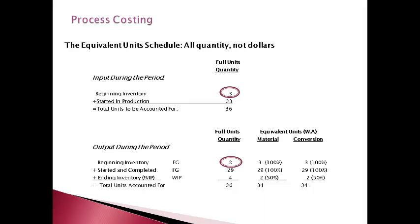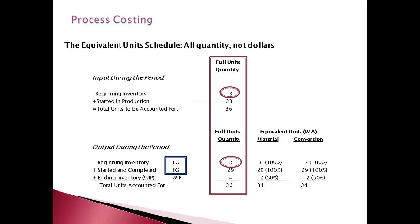Beginning inventory is finished first before other units are started. The 33 units started during the period were either started and finished this period or are not yet finished and still on the production line at the end of the period. The beginning inventory that is finished first and started and completed units are moved to finished goods and valued as finished goods. Ending inventory that is on the production line is valued as work in process. Management estimates how far along in the process the beginning and ending units are, and equivalent units are valued using the percent completed during the period. Multiply the number of full units on the left by the percent complete to get the equivalent units of work for the period.